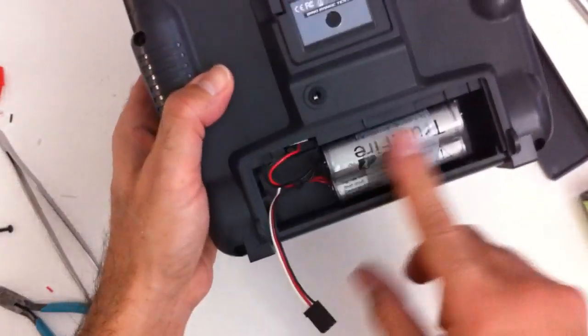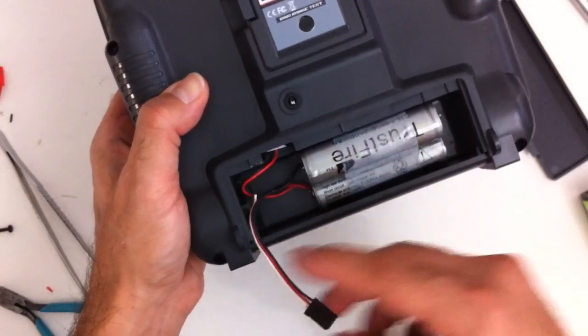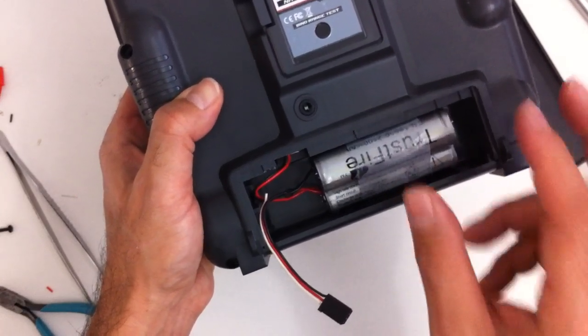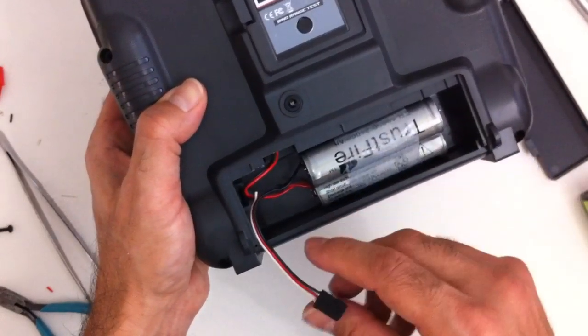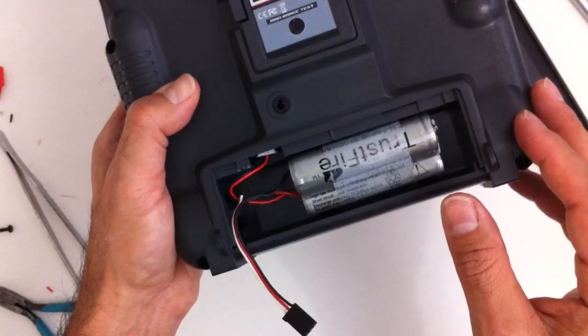That's basically the Turnigy 9X battery mod as per the RC model reviews. You may want to check out, I'll put a link in the description for the actual details about the mod itself. It's pretty easy to follow. I hope you found this video helpful. Don't forget to thumbs up and subscribe. Thanks for watching.